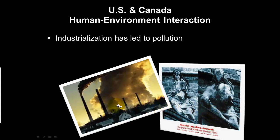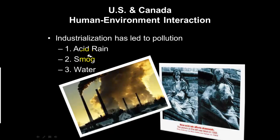To close out our discussion of North America, we'll cover human-environment interaction. Industrialization has led to significant pollution — these graphics illustrate air pollution and acid rain, showing what acid rain does to stonework and statues over time — the weathering effect seen in before-and-after images. Pollution from industrialization in North America includes acid rain, smog, and water pollution. Make sure you highlight the answers to the learning targets on your notes guide and answer all questions for full credit. Have a great evening.